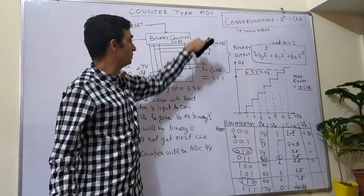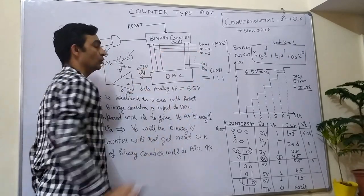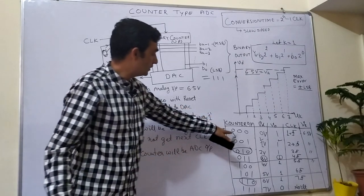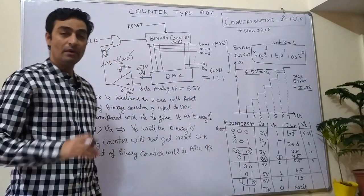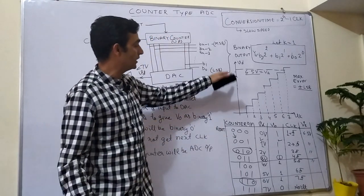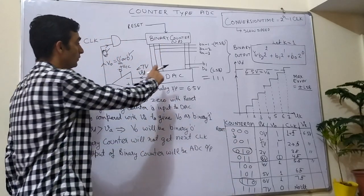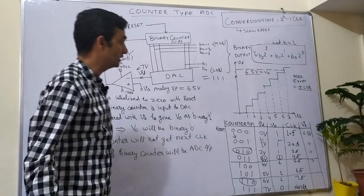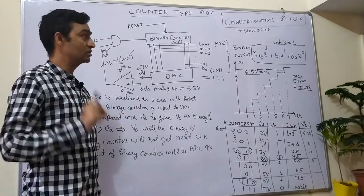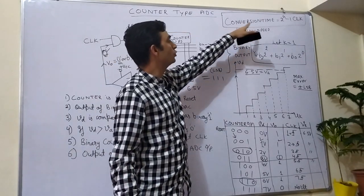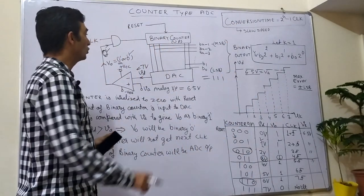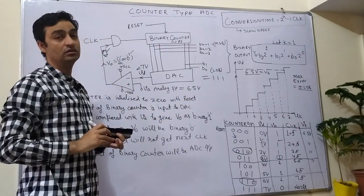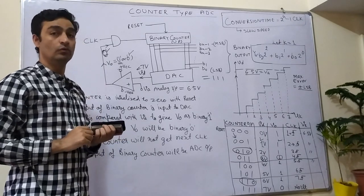Next, the conversion time: for this 3-bit example with input 6.5 V, conversion required 7 clock cycles (1 through 7). A 3-bit counter counts from 0 to 7, so the maximum is 2³ − 1 = 7. The generalized expression is that conversion time requires 2ⁿ − 1 clock cycles to convert an analog signal to a digital signal. This shows that the counter type ADC is a very slow analog to digital converter. Thank you very much.